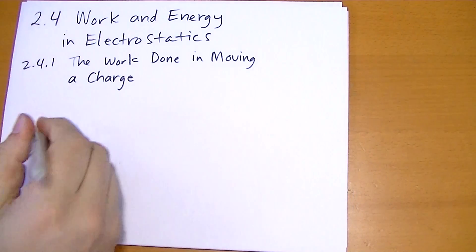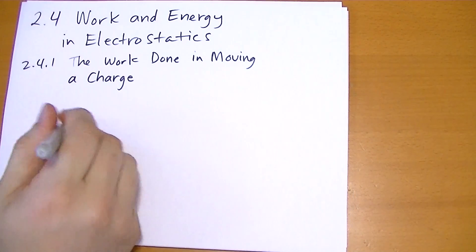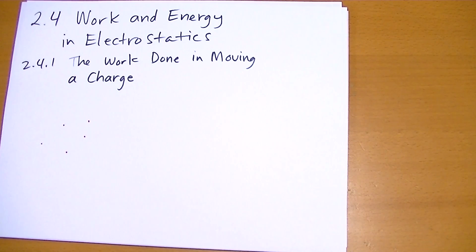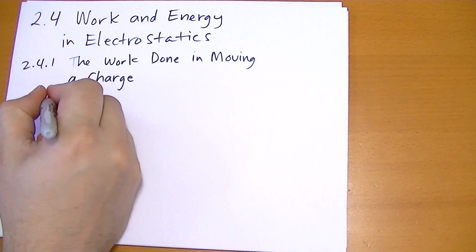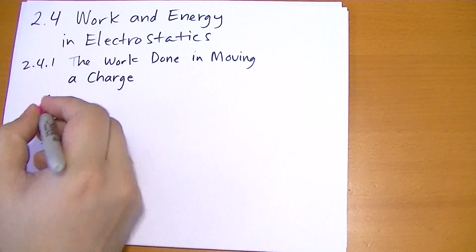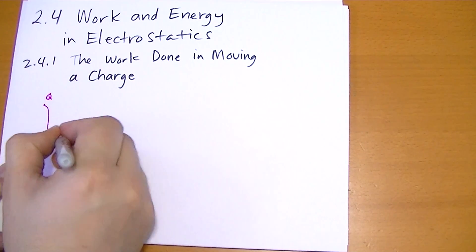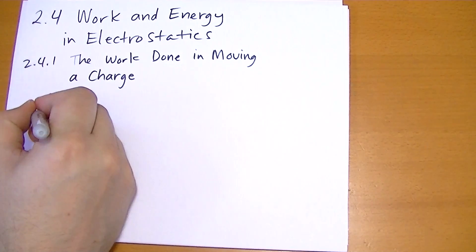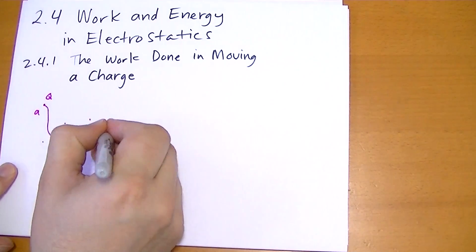We start with some charges distributed across space in some way. And what we're going to do is take charge Q and move it along some path from point A to point B.